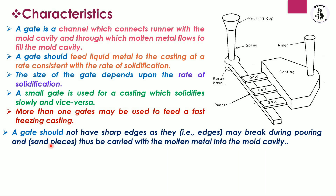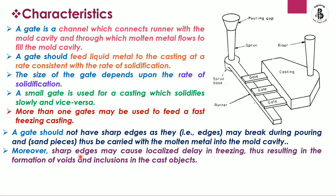The molten metal collects into the pouring cup or basin, and with the help of the sprue it collects into the sprue base. We should avoid sharp edges because they cause erosion of the gating system. Furthermore, sharp edges may cause localized delay in freezing, resulting in the formation of voids and inclusions in the cast object — these are casting defects found after solidification.